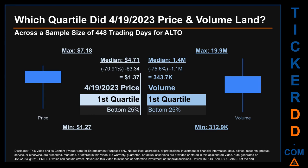Daily volume saw a max of 19.9 million and a minimum of 312.9 thousand. Quartiles tell us about the spread of a data set by breaking that data set into quarters, just like how the median breaks the set into half. Descriptively, ALTO has a median price of $4.71; therefore, April 19, 2023's price was lower from that middle marker by 70.91%. The day's volume of 343.7 thousand was less than the median by 75.6%.